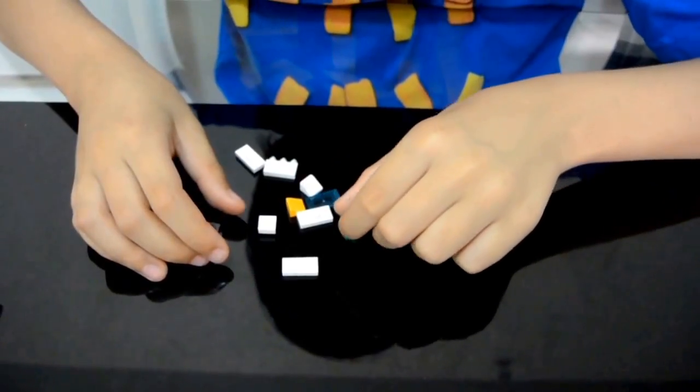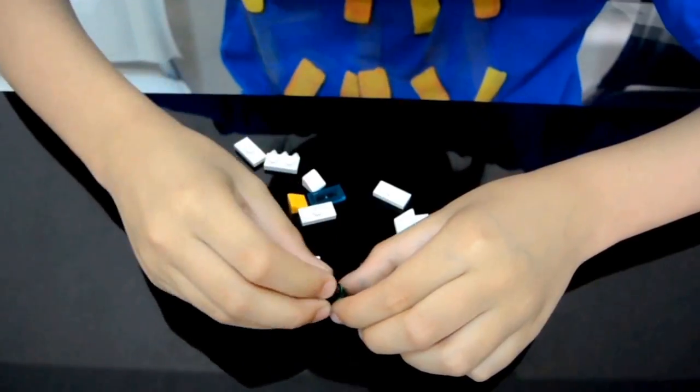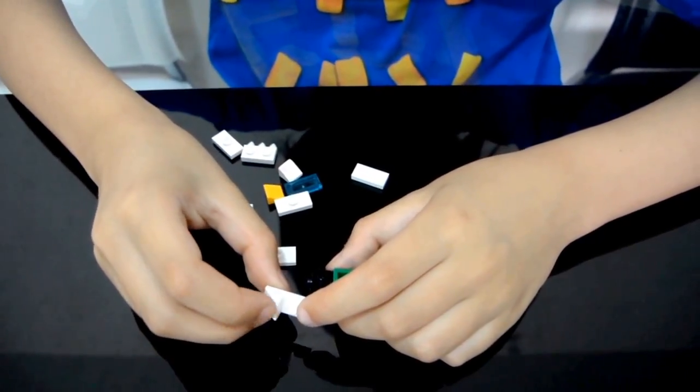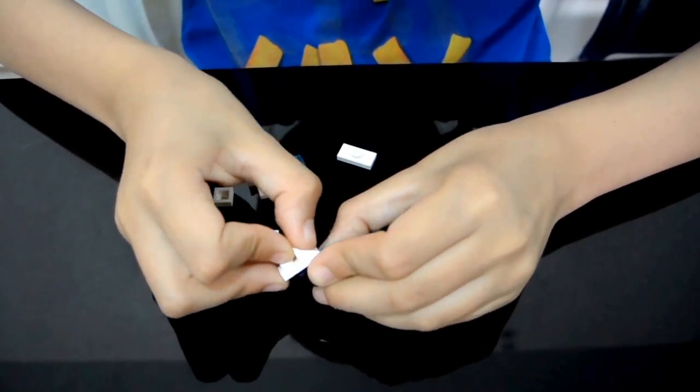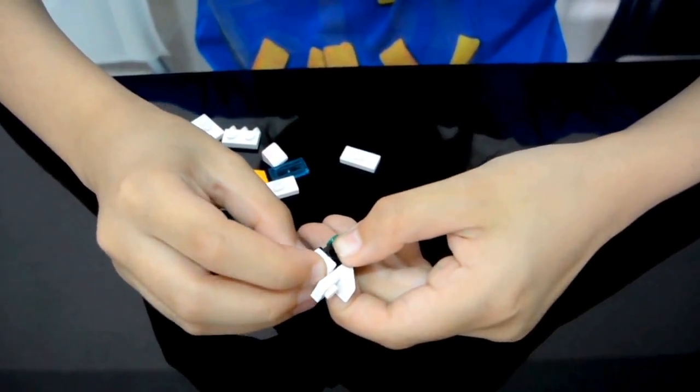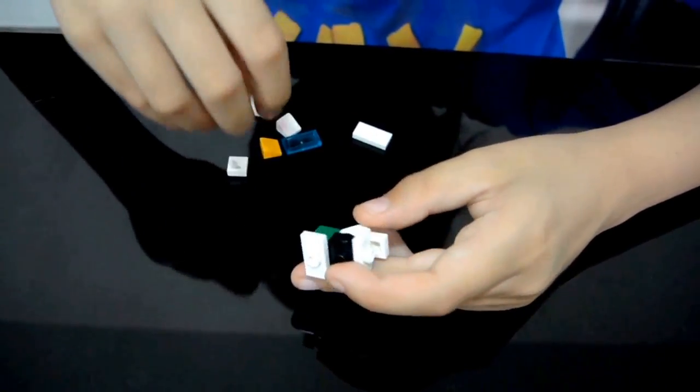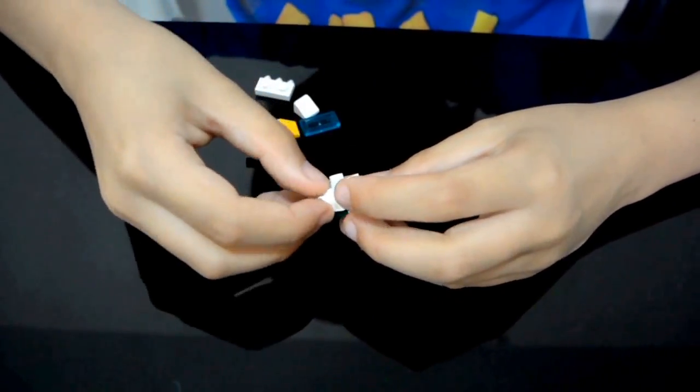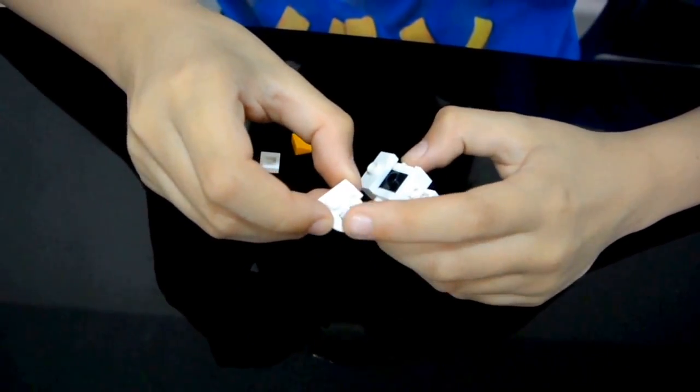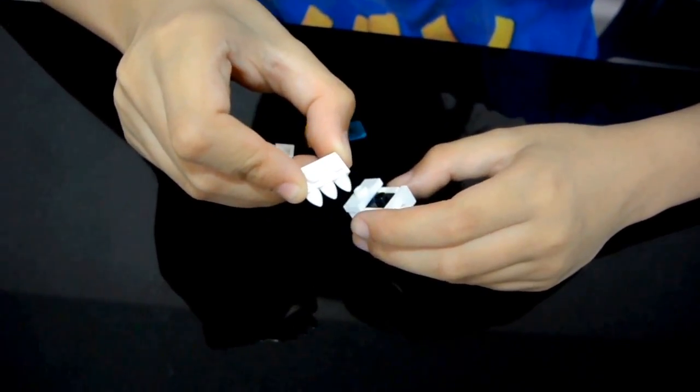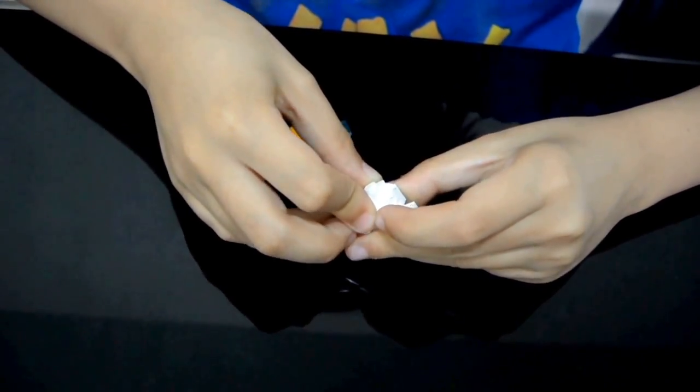For the head, get an Erling brick and put a Travis brick on top of it. Here, get this 1x2 plate that is half cheese slope. Put two jumper plates like this and like this, and put two more on the sides. Get this 1x2 with three teeth sticking out of it and attach it right here.